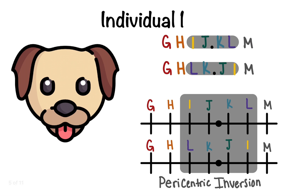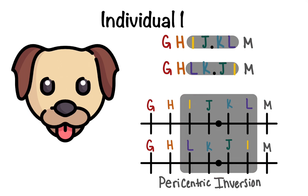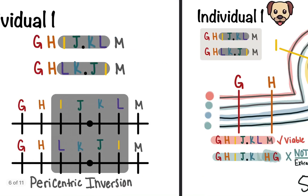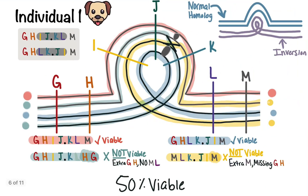Now let's look at individual one, which is this dog right here. If we match these two chromosomes with each other, we can tell that this region right here is inverted. It's going to be a pericentric inversion because it includes the centromere. To be able to match the chromosomes and maximize the viability, we'll need an inversion loop. Let's note that there's a crossing over occurring between J and K.